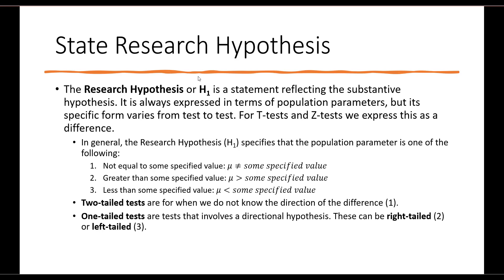If we are saying that the population parameter is not equal to some specified value, this is called a two-tailed test. It is for when we do not know the direction of the difference between our population parameter and the value we have selected. However, if we are specifying a direction — either that our population parameter is greater than or less than some specified value — then we are doing a one-tailed test. These can be right-tailed when we say the parameter is greater, or left-tailed when we say it is less than.